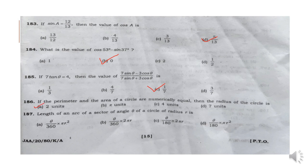Next: The length of an arc of a sector of angle theta of a circle of radius R is Option B: theta by 360 into twice pi R.